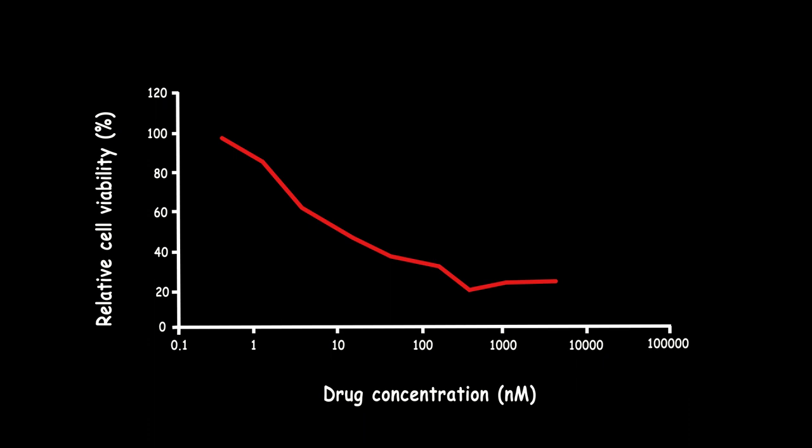These graphs belong to the free SN38 and the SN38 that binds to the pegylated graphene oxide, which shows that the drug is a little more effective but behaves in the same way compared to the free drug.